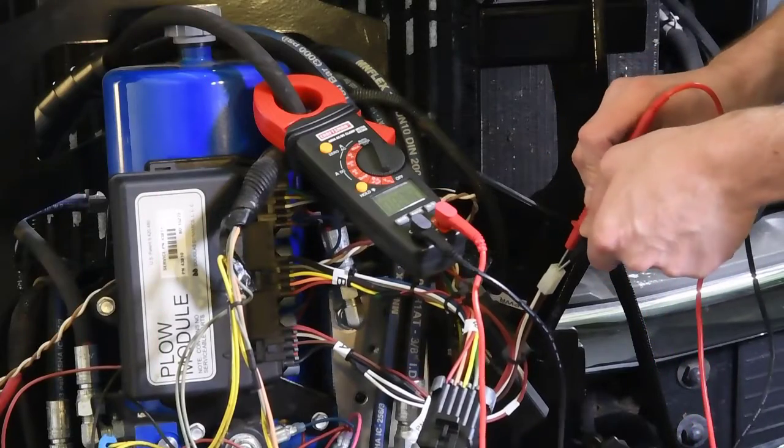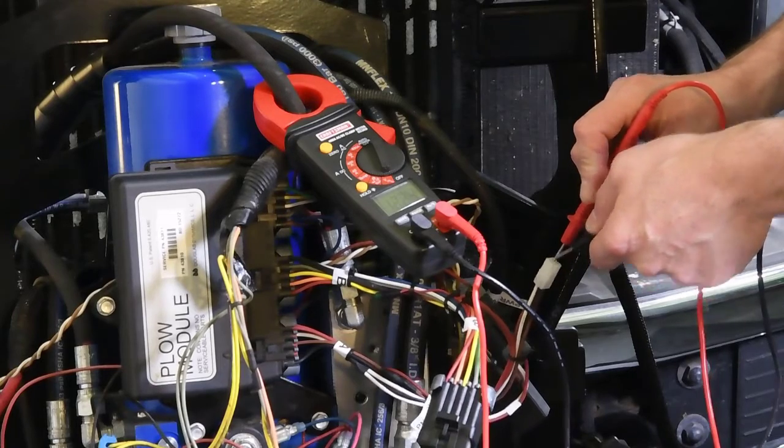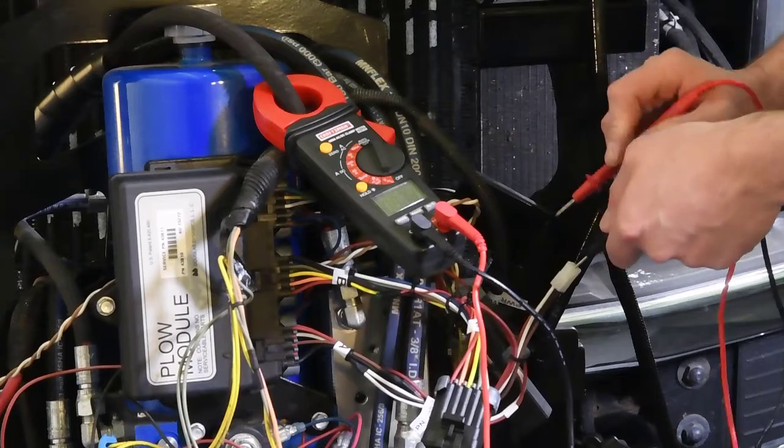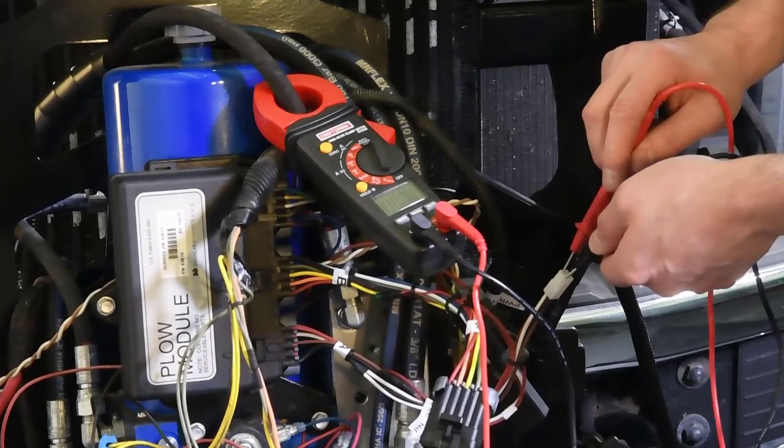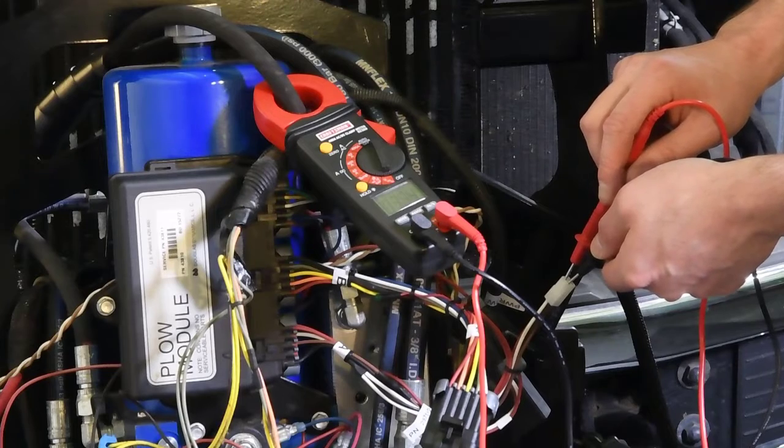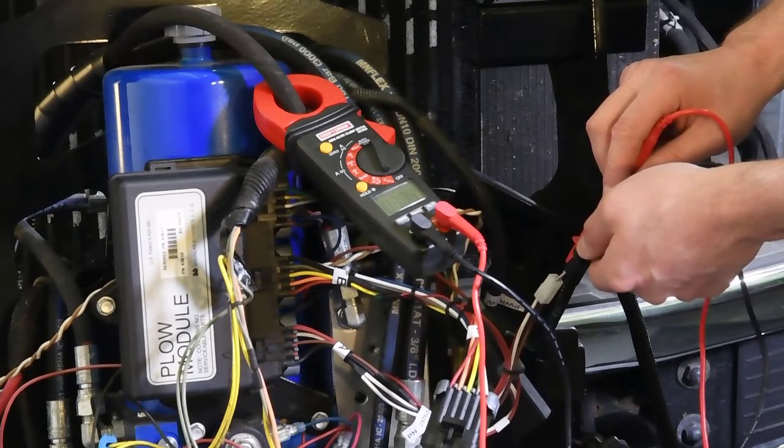Next, check for voltage where the control plugs into the vehicle control harness. There are two communication wires. One should have about 1.5 volts and the other around 3.5 volts. If you're utilizing a diagnostic harness as shown, repeat this procedure in the cab of the vehicle.